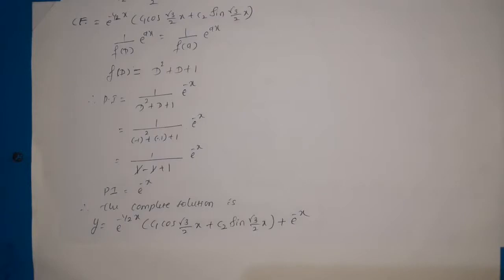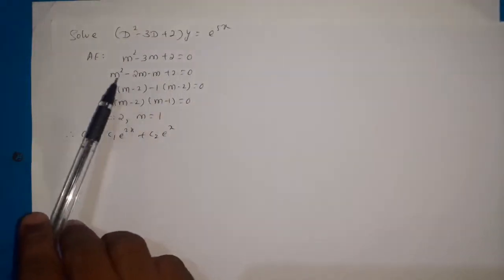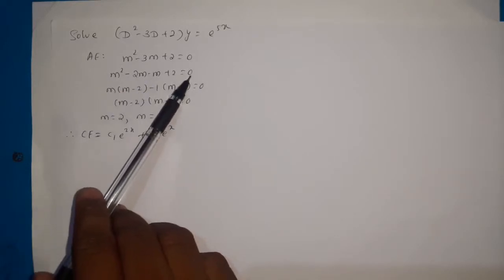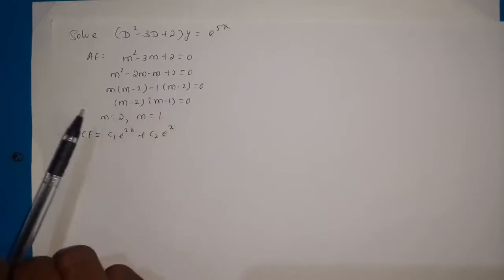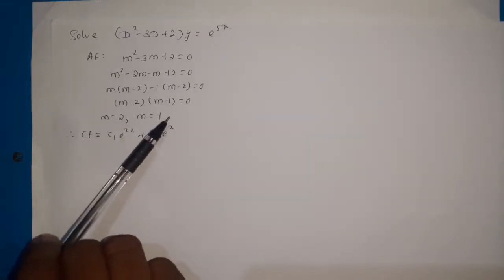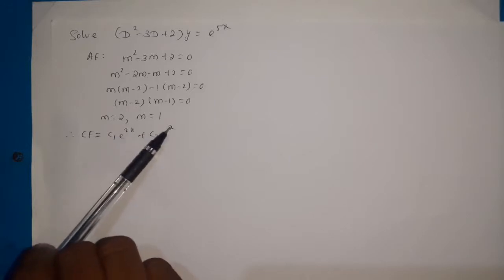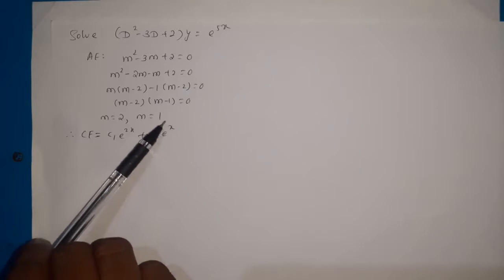This is the example for particular integral when the RHS is of the form e^(ax). The next example: (D² - 3D + 2)y = e^(5x). The auxiliary equation is m² - 3m + 2 = 0. Factorizing: (m - 2)(m - 1) = 0, giving roots m = 2 and m = 1. Since the roots are real and distinct, the complementary function is c₁e^(2x) + c₂e^x.